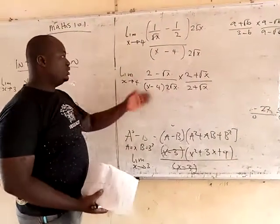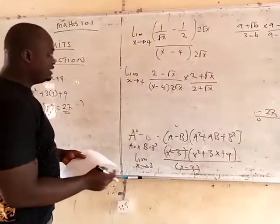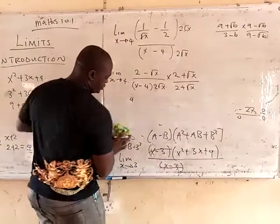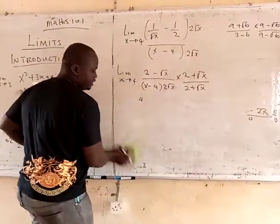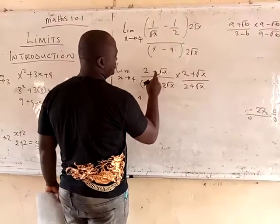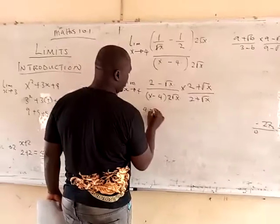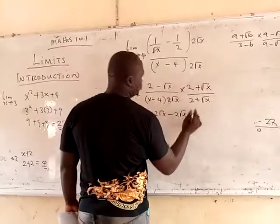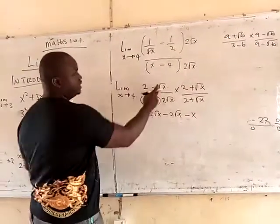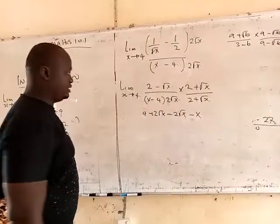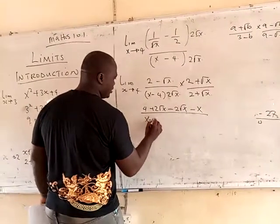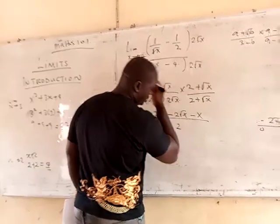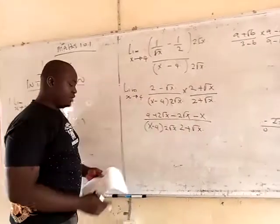Good. Now once you reach here, life is somehow easier. The next thing is to open up your bracket. 2 times 2 will give you 4. Now, 2 times root x will give you plus 2 root of x. Minus root x times 2 will give you minus 2 root of x. This times this will give you minus x, because root of x squared gives you x. Now divide everything by x minus 4 — do not touch it — times 2 root of x, and then times 2 plus root of x.